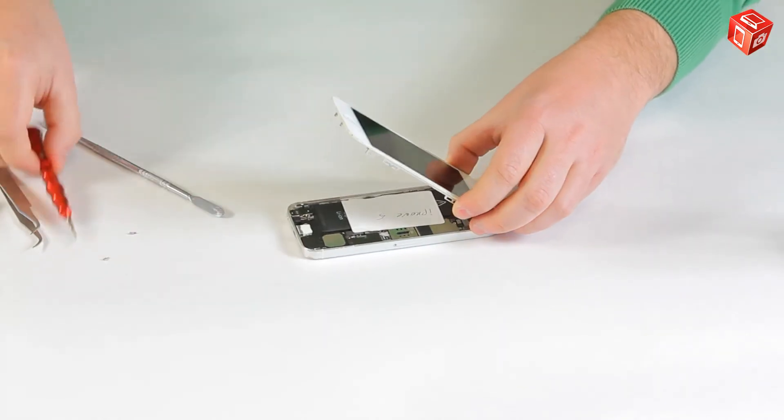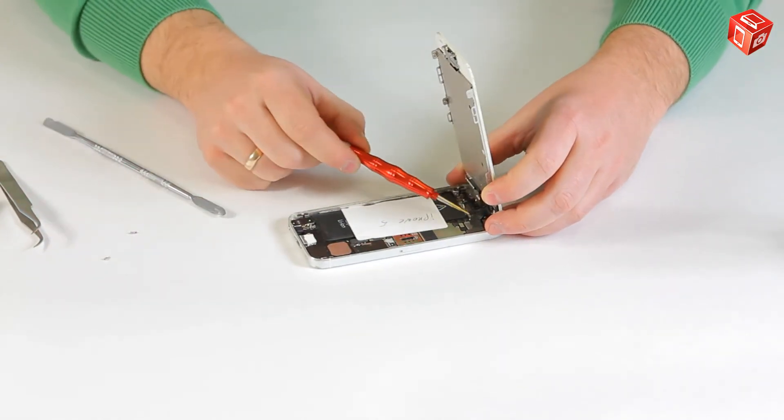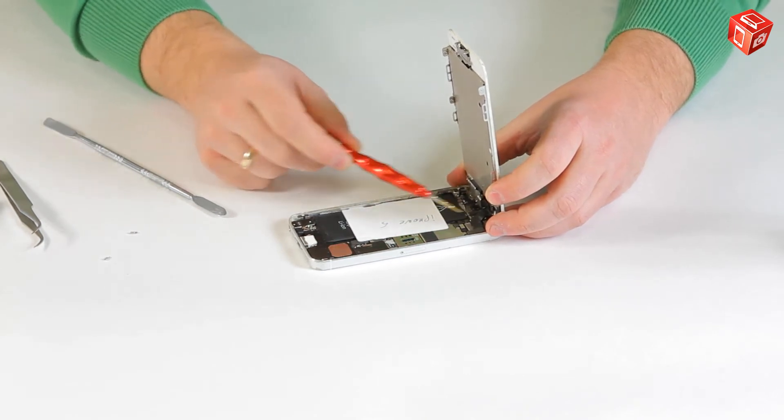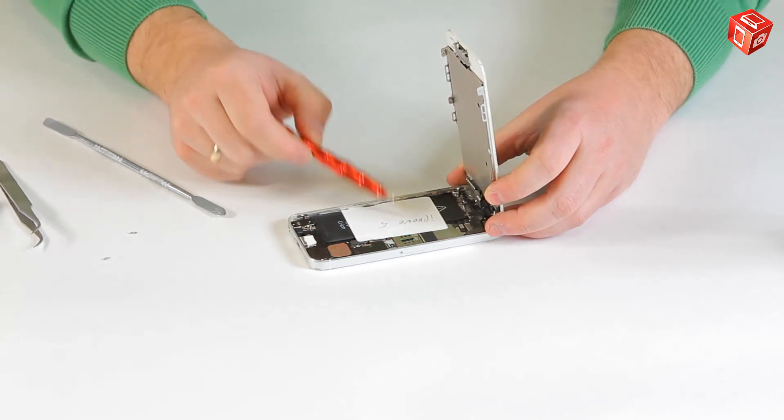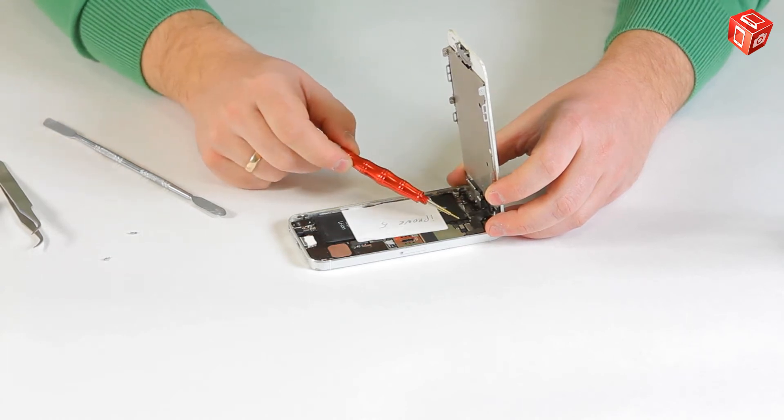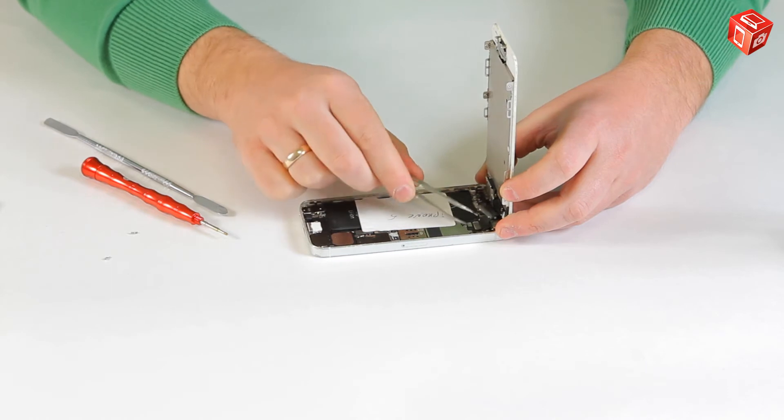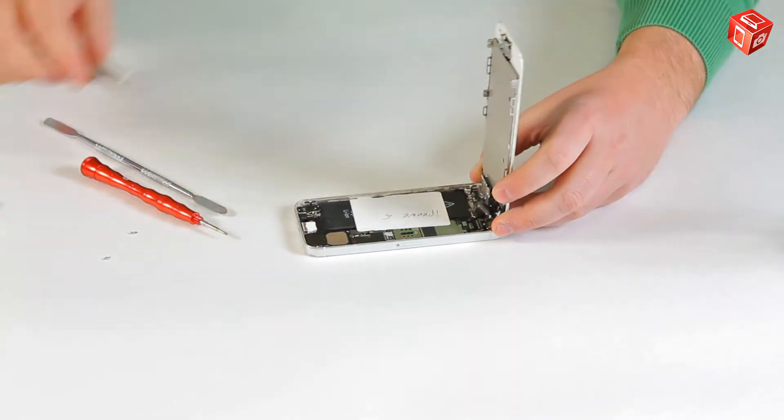Now using a screwdriver, unscrew and remove the three screws of the shielding that covers the display connectors. Note that this shielding is missing in this video because our iPhone is used for testing. Using tweezers, disconnect the connectors and remove the display module.